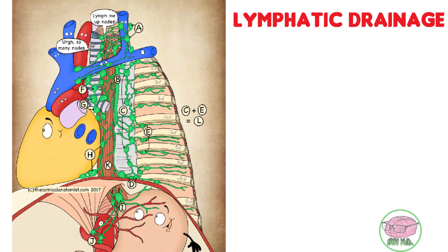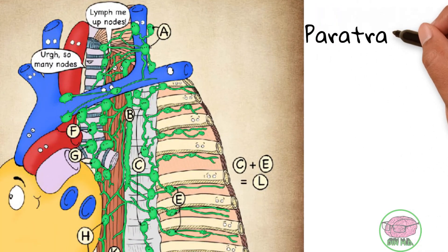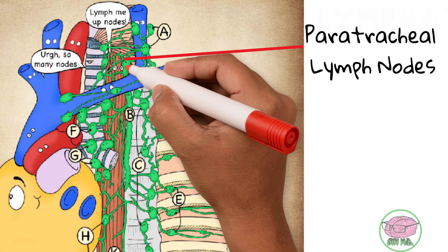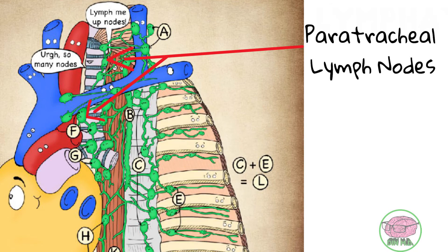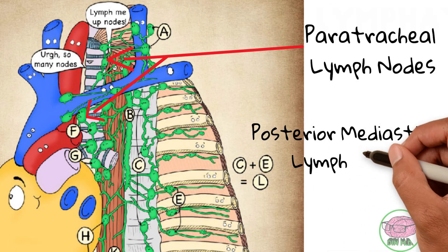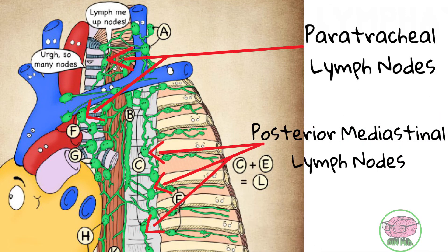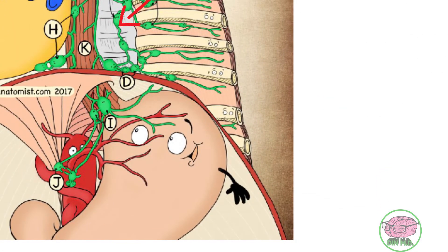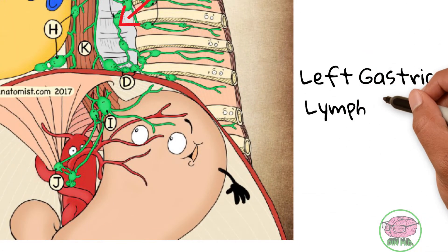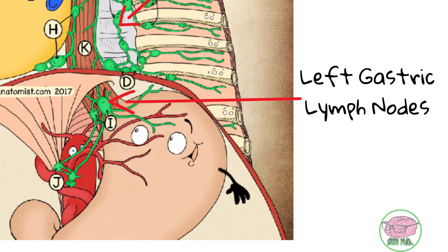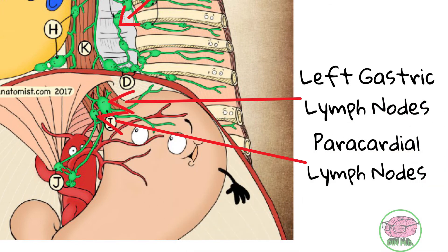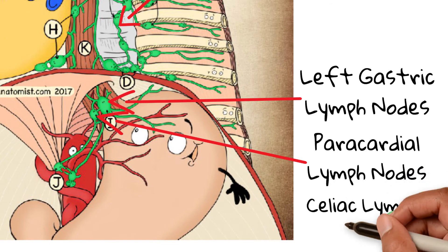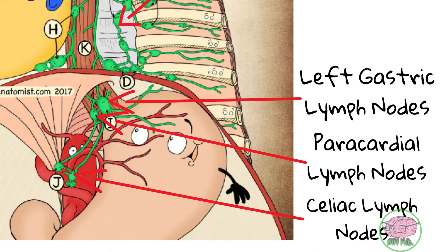The cervical esophagus lymphatic drainage goes to the paratracheal lymph nodes, meaning the lymph nodes that are located on either side of the trachea. The thoracic esophagus lymphatic drainage goes to the posterior mediastinal lymph nodes. And finally the drainage from the abdominal esophagus goes into the left gastric lymph nodes, which in turn drain into the paracardial lymph nodes, which are the lymph nodes located on either side of the cardias. And these lymph nodes finally drain into the celiac lymph nodes that are the ones located along the celiac trunk.